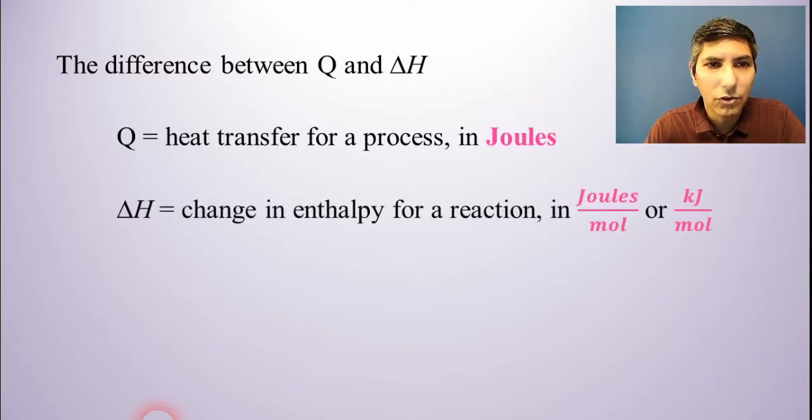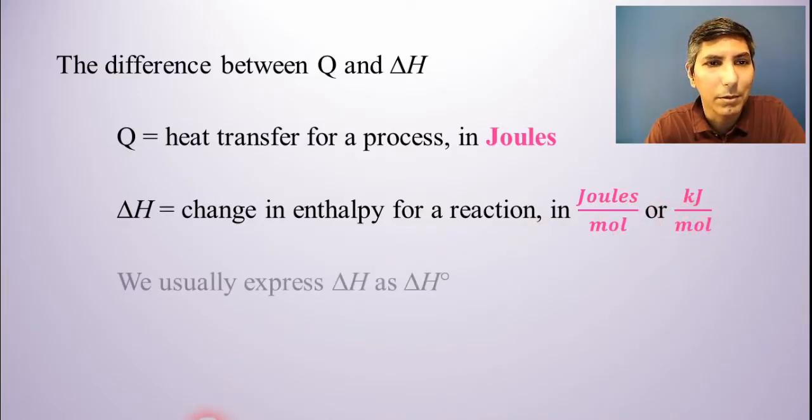On the other hand, when we're working with delta H, that's the change in enthalpy for the reaction. The units are different. We're not just talking about joules, it's joules per mole, or kilojoules per mole. So in order to solve for delta H, we have to do essentially two calculations. We have to find the joules, and that will be in usually Q equals MC delta T, and then we have to calculate the moles, which will be a stoichiometry problem.